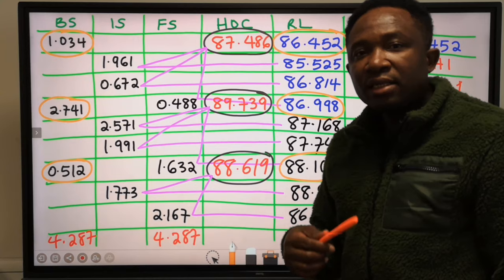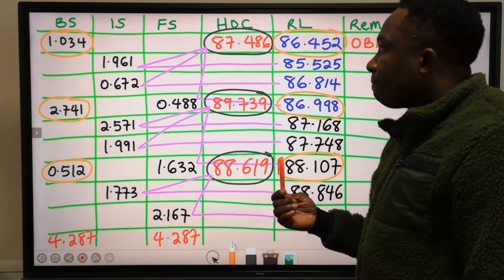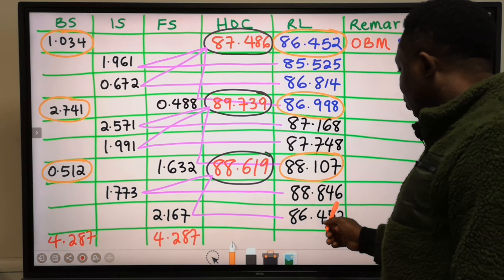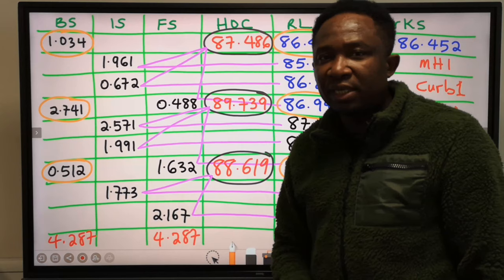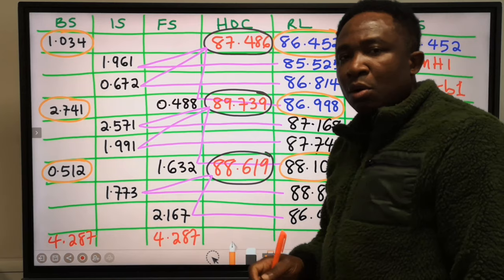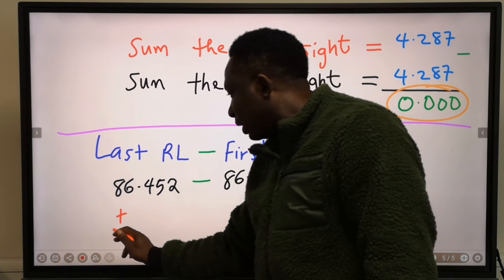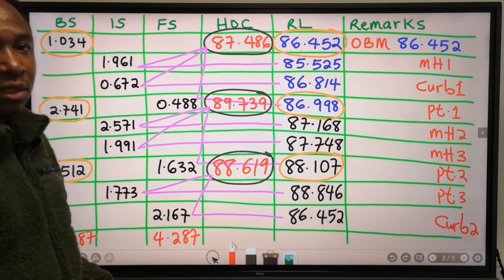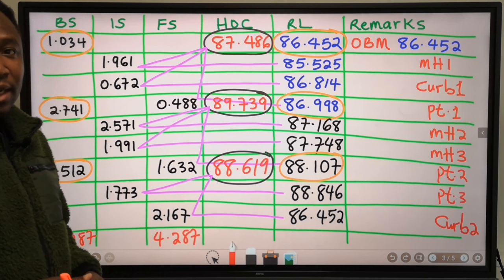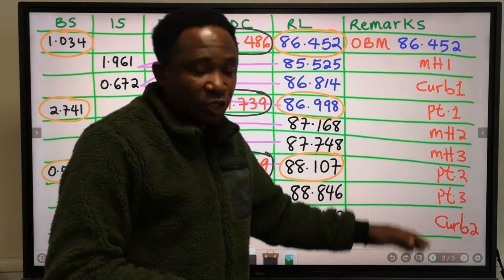In many tabulations, the sum of the back-sight and the sum of the fore-sight will not be the same. In such cases, the last reduced level and the first reduced level will also not be the same. However, the difference between them must be very close — the difference should not be more than plus or minus 0.05. Now that you know how we tabulated the data and reduced the levels using the height of collimation method, let's move on.